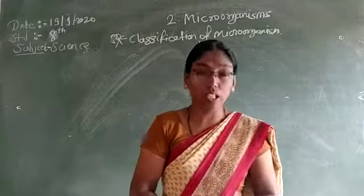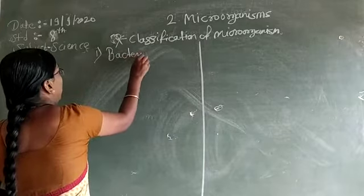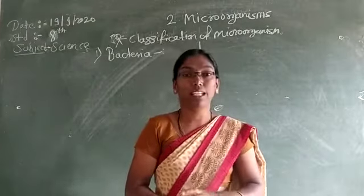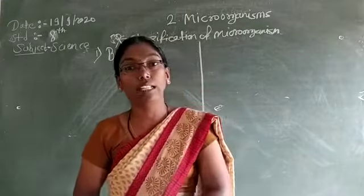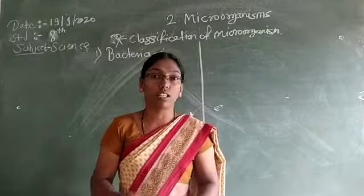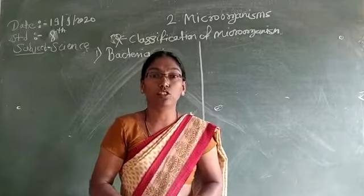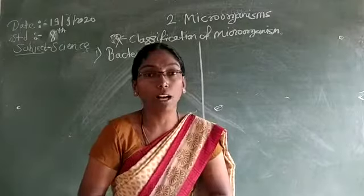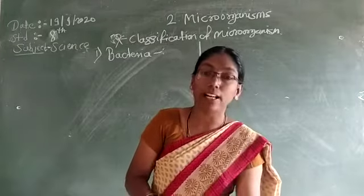We start today with the first classification — bacteria. We will see the basic concepts: how bacteria are, where we can see them, and after that some bacteria are useful and some are harmful, that we will also see. Like microorganisms, in the 5 types — bacteria, virus, algae, and others — some are useful and some are harmful. So we can go with these points. First, bacteria — how they are, we can see point wise.